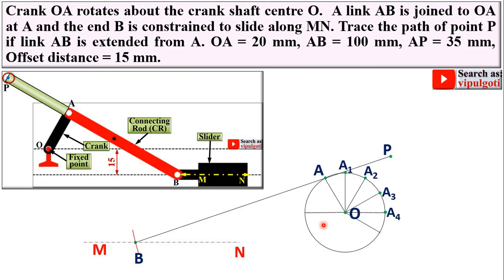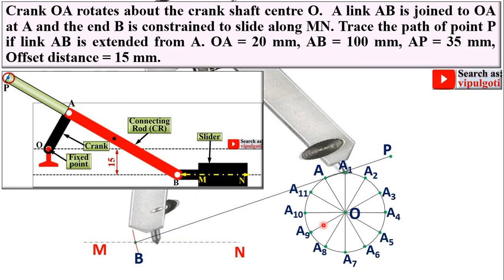Now divide the circle into 12 equal parts with the help of the compass. Then set the compass as the length of the connecting rod, which is given as 100 mm. Draw the arc over here.